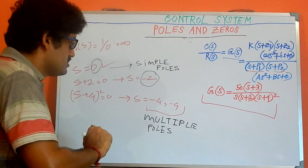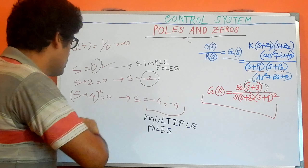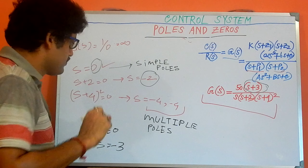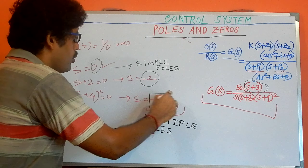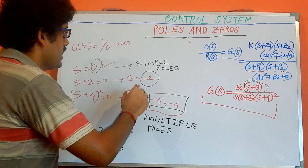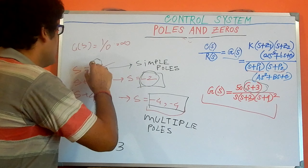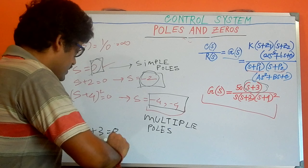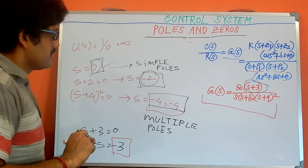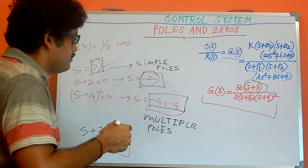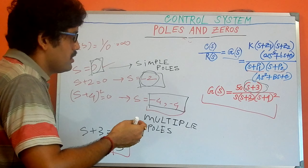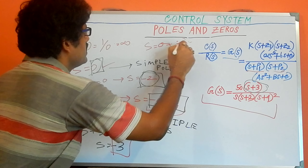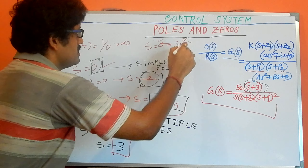To find the zeros, there is only one point: s + 3 = 0, giving s = -3. So our multiple poles are at -4 and -4, our simple poles are at -2 and 0, and our zero is at -3. Now for the coordinate system: s = σ + jω, where σ is the real part and ω is the imaginary part.